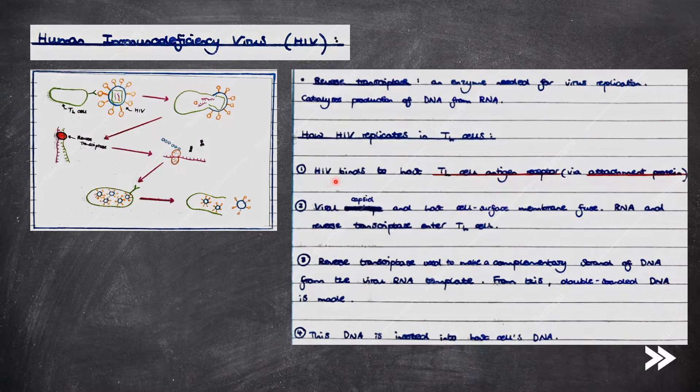So first of all, HIV binds to the host T helper cell antigen receptor via its attachment protein. Next, the viral capsid and the host cell surface membrane fuse and RNA and reverse transcriptase enter the T helper cell. The reverse transcriptase is used to make a complementary strand of DNA using the viral RNA template.